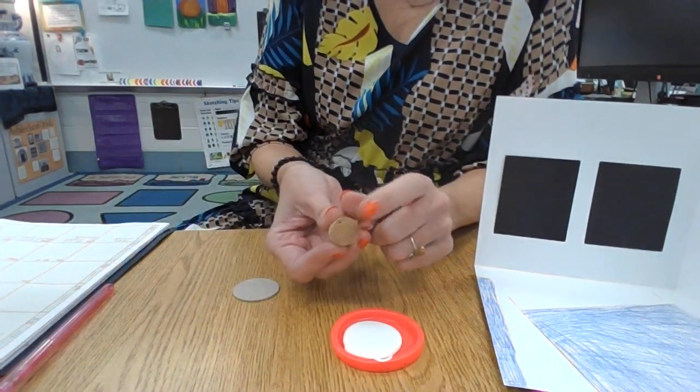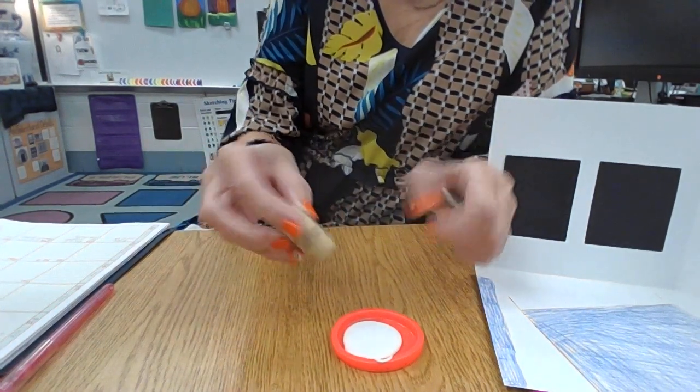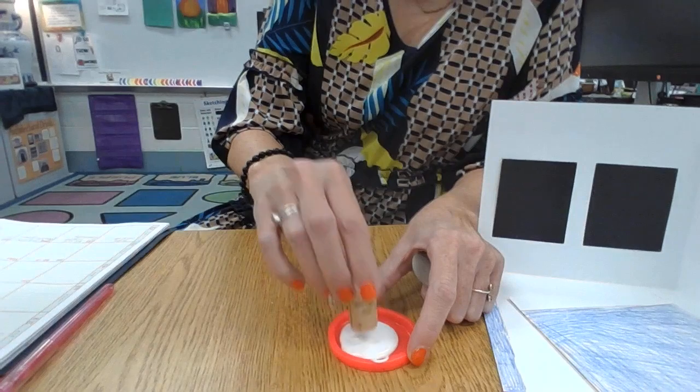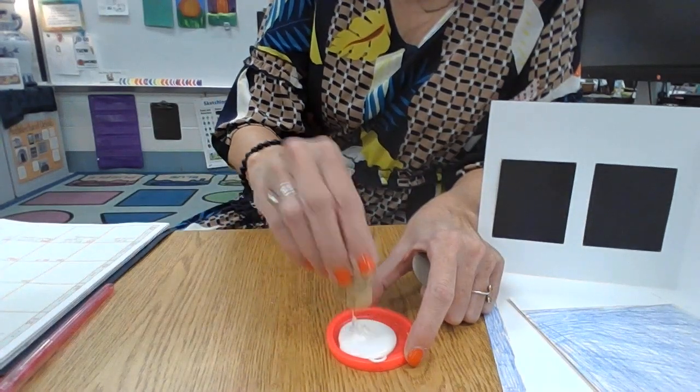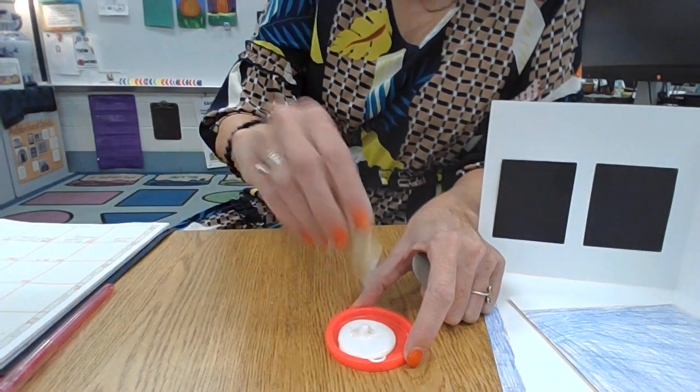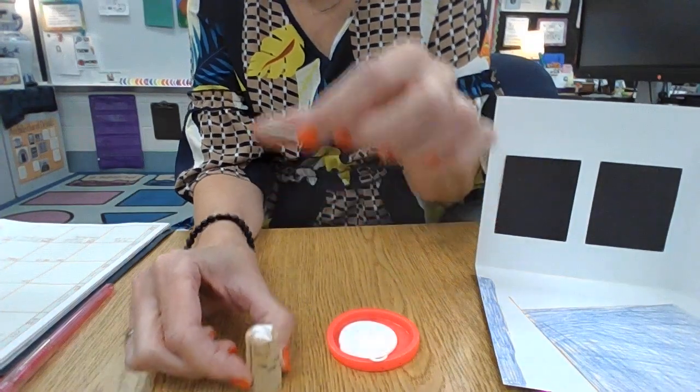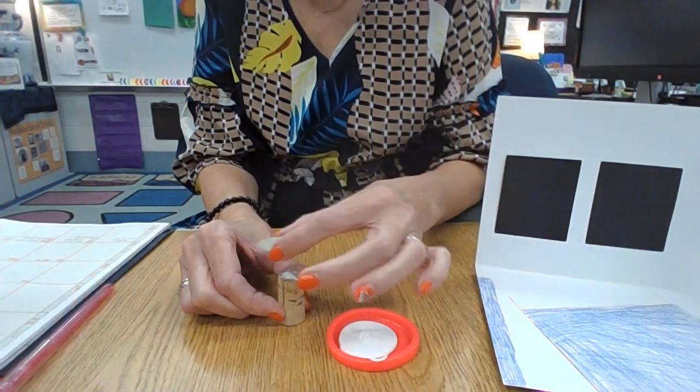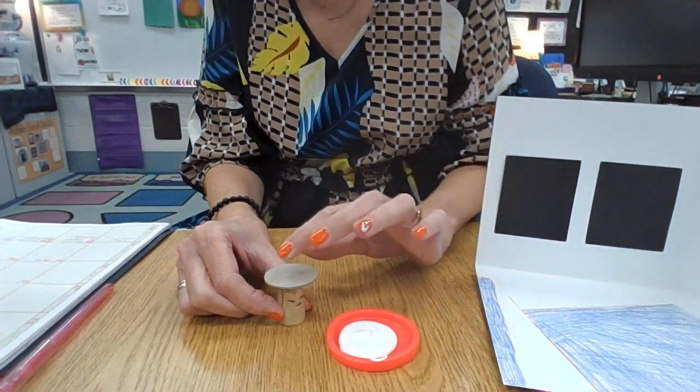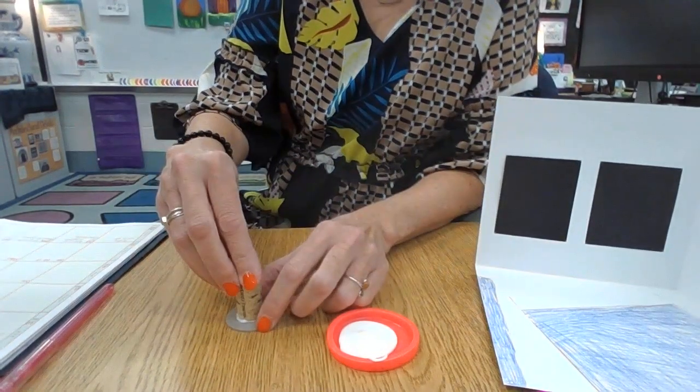So you're going to put the glue on the top that's going to connect to the circle. You're just going to touch it to it, take it around a little bit. It's really thick. Get a little coating of glue on top, and then you're going to center your circle right on top. Press it down. You can turn it upside down to check it.